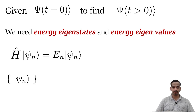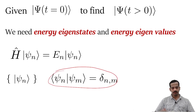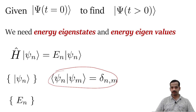That means the inner product between any two of them vanishes, and we can normalize these eigenstates. If we normalize them, they will follow the orthonormality relation. When we solve this energy eigenvalue equation, we will also get energy eigenvalues, which are scalars.